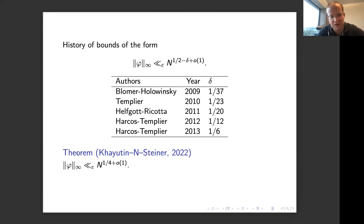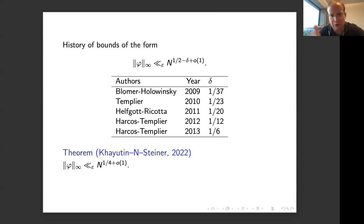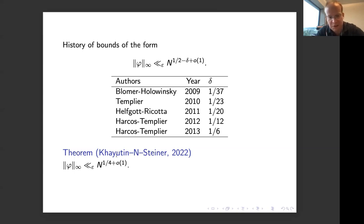It's a rare thing. For the zeta function, this would be like proving a bound of T to the one-eighth, which is hopelessly out of reach. This is a situation where one can apparently prove something halfway like that. That's the result I'll try to say something about — what went into the proof — for the remainder of the talk.